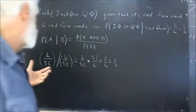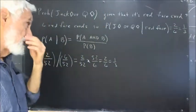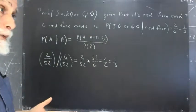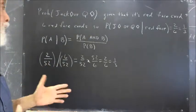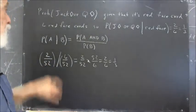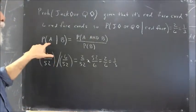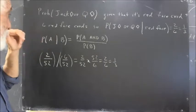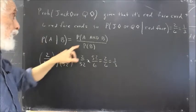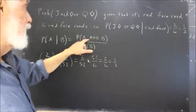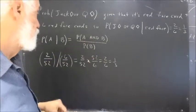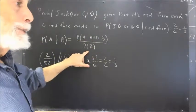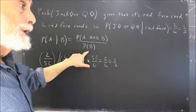Now there's a formula we have for a situation where you're given a condition. The probability of A given B is the probability of A and B divided by the probability of B.